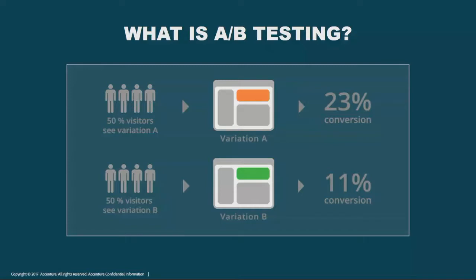In this example, you can see we have some dynamic content showing in the upper right-hand corner — variation A and variation B. In this case, variation A performed better. So for the remainder of our audience, we can use that content because we feel like that variation performed better for whatever metric we want to use.